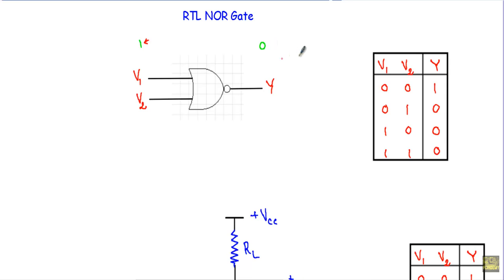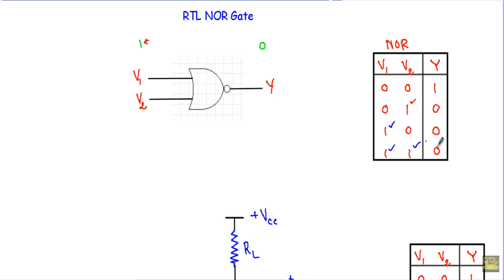Let me show the truth table for the NOR gate. For inputs 0 0, there is no 1, so output will be 1. For 0 1, we have at least one 1, therefore output will be 0. For 1 0, we have at least one 1, so output will be 0. For 1 1, we have two 1s, therefore output will be 0.